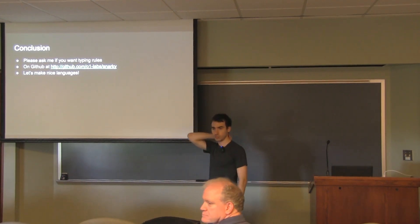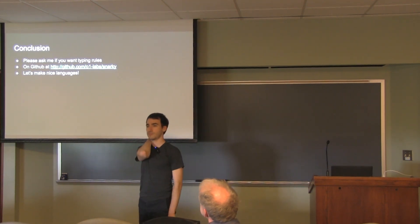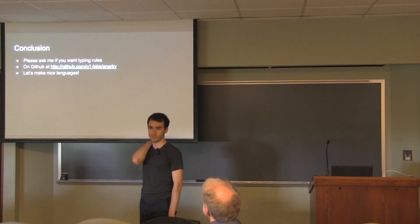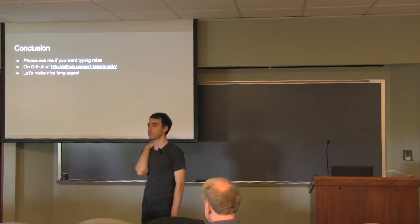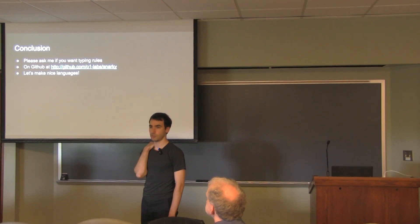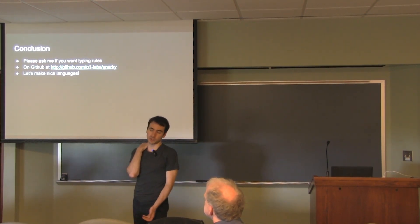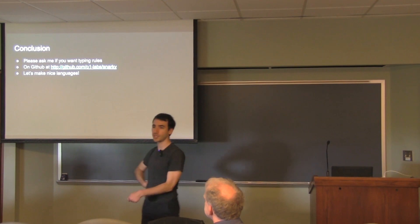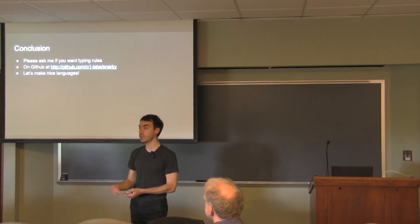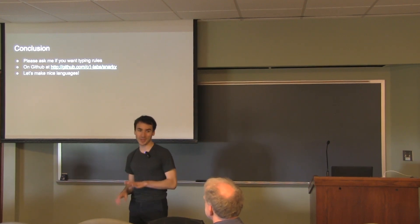So you'd write the program, send it to somebody, and in a zero-knowledge way they supply the inputs, and as an output they get this proof. They send you the proof, and you can verify that the inputs they provided to the program you wrote actually made all the assertion facts pass. The proof they provide doesn't leak any information about the witnesses they plugged in, except for what you could deduce from knowing it was a valid proof.